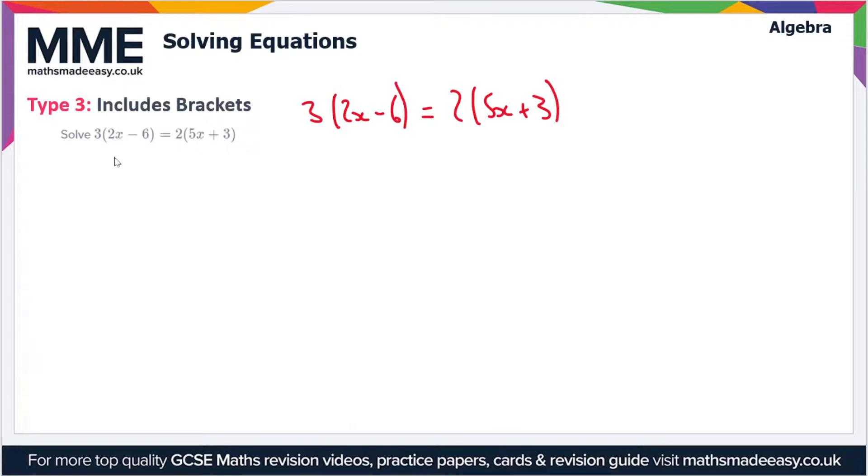And the first step here is going to be to expand out the brackets. We've got a separate video on expanding brackets if you're not sure how to do it, but the process is as follows: we do 3 times 2x, which gives us 6x. Then we do 3 times minus 6, which is minus 18. So that's going to be equal to 2 times 5x, which is 10x, plus 2 times 3, which is 6. So we've got 6x minus 18 is equal to 10x plus 6.